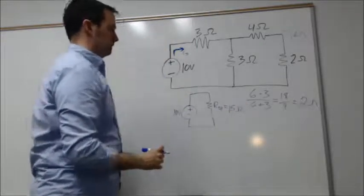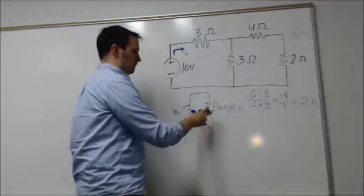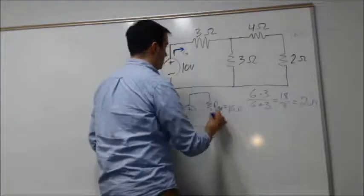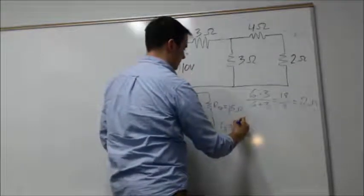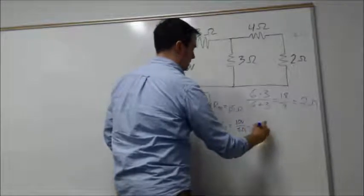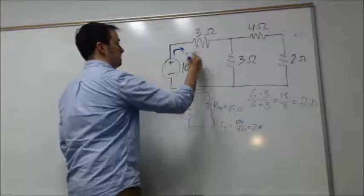Using Ohm's law, I know the voltage across this resistor and the resistance itself, so our I_S value as defined here is simply V over R, so 10 volts over 5 ohms, which is 2 amps output.